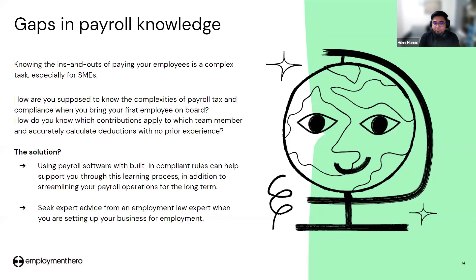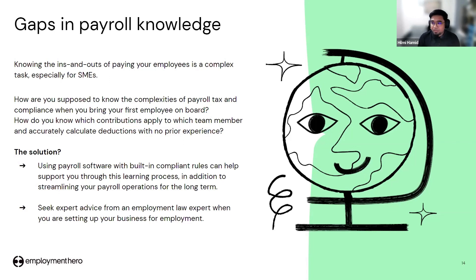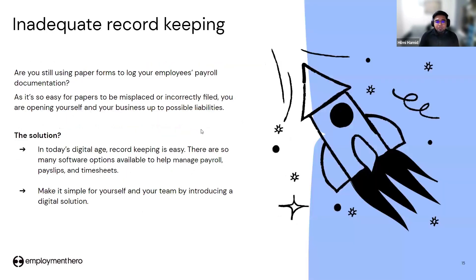The solution is to use payroll software with built-in compliance rules, which can help you through the learning process while streamlining your payroll operations long-term. You can also seek expert advice from an employment law expert when setting up your business for employment. These are solutions to help you avoid mistakes during payroll processing.